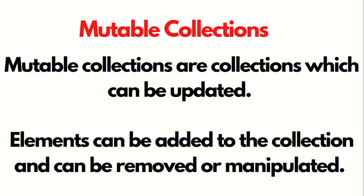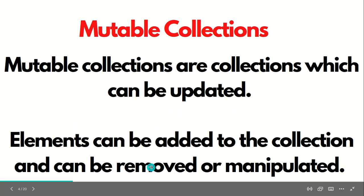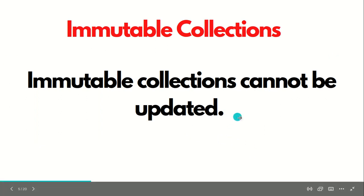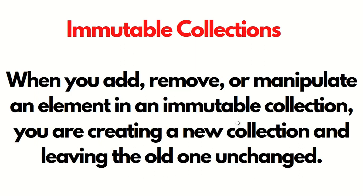So what are mutable collections? Mutable collections are the collections which can be updated, which can be changed — elements can be added to the collection, and it can be removed or manipulated. These are called mutable collections. What are immutable collections? Which are opposite of mutable, which cannot be updated. These are called immutable collections.